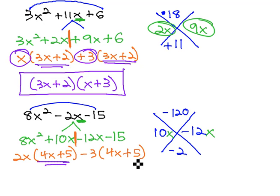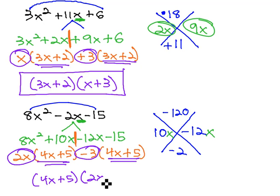Notice we have the matching binomial 4x plus 5, and the other stuff, 2x minus 3, becomes our remaining factor.